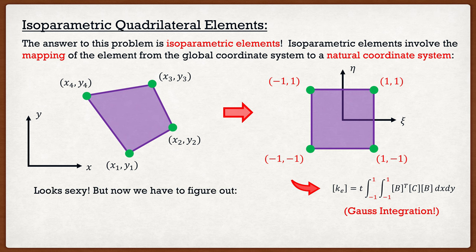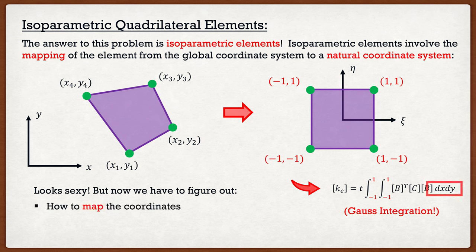While those consistent integration limits make programming straightforward, there are problems with this mapping. First, how do we map the element mathematically? And second, in the stiffness matrix formula, we've switched the integration limits to the natural coordinate system but the last part still reads dx dy — we're still integrating in the global system. Since we switched to the natural coordinate system, we must switch to dη and dζ. That's the first problem to address.